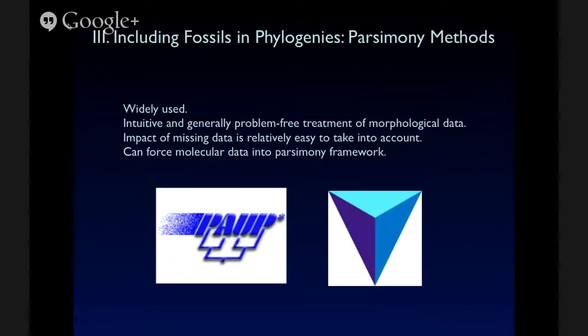Okay, so now let's look at some ways, some methods for including fossils and phylogenies. Widely used at present are parsimony methods implemented in programs like POP and TNT. These are generally intuitive for the treatment of morphological data. It's very easy to understand how to order characters. We have a relatively good understanding of how missing data is going to affect support values and things like that in a parsimony framework.